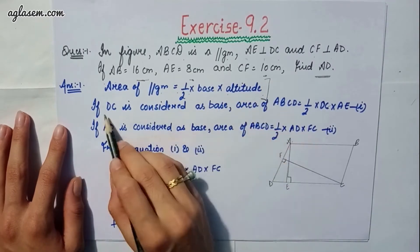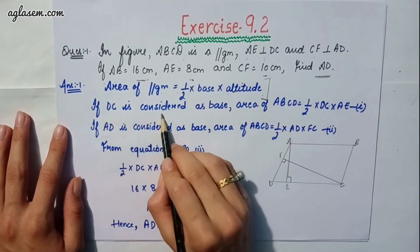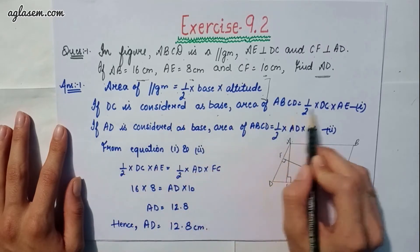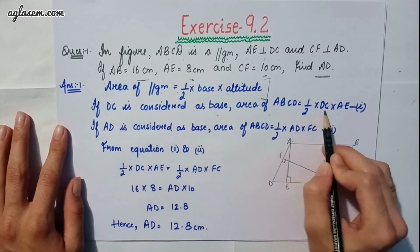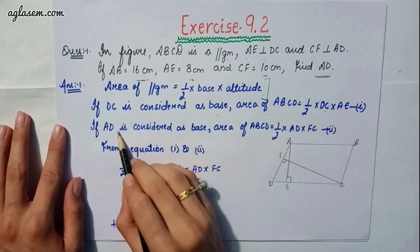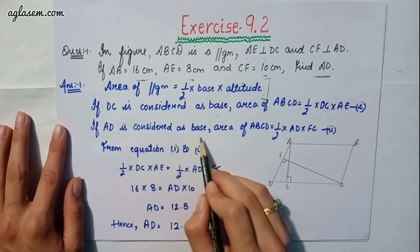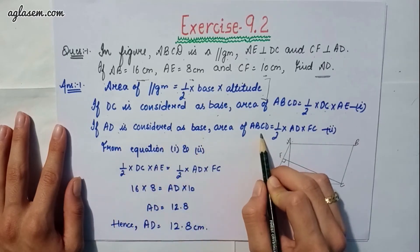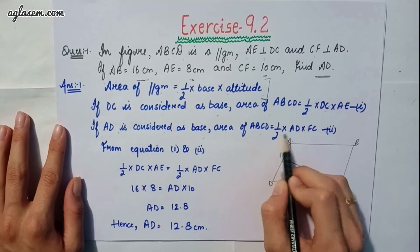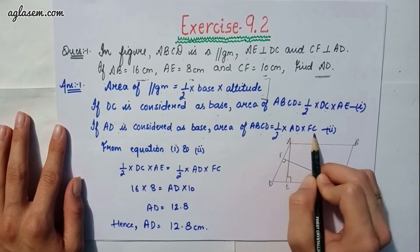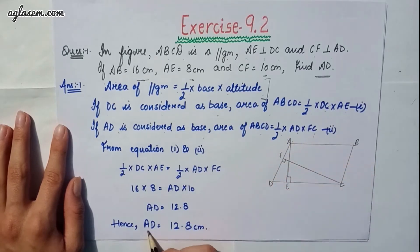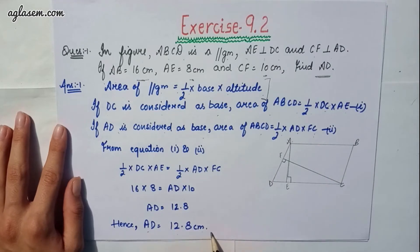If DC is considered as the base, then area of ABCD equals DC into AE. If AD is considered as the base, then area of ABCD equals AD into FC. Joining both equations, we will get AD as 12.8 centimeters.